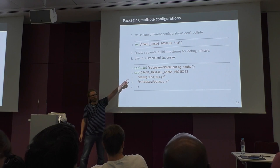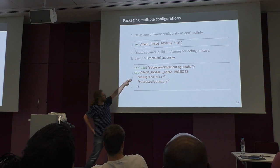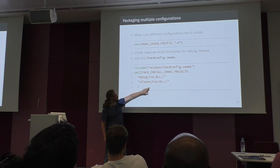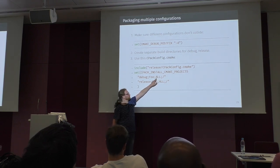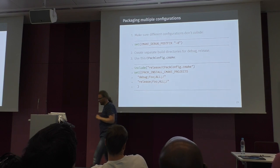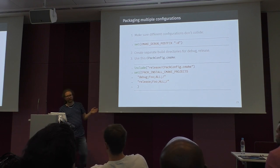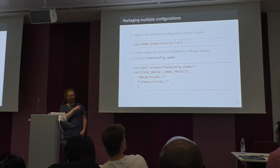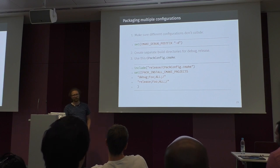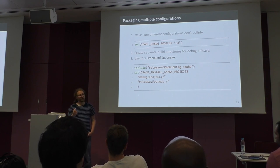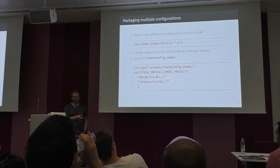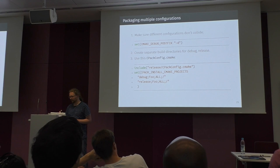We include both the release and debug builds and set the two quadruples — the first one is the path to the build directory (debug and release), the project is foo in both cases, we package all components, and the directory is the root of the package. This creates a single package containing both debug and release builds. The exported targets contain information for both, so clients in their debug build use the debug libraries and in release use the release libraries — all handled by CMake.